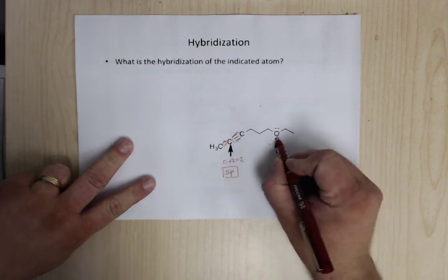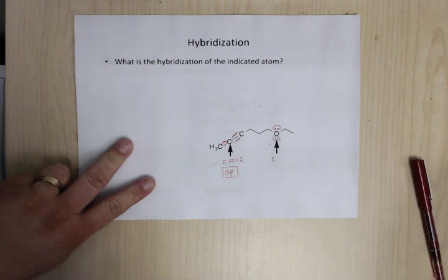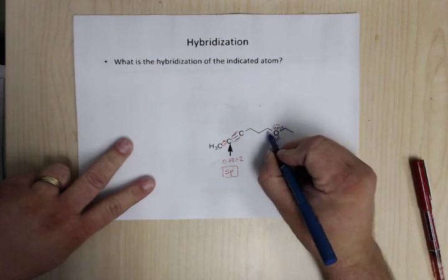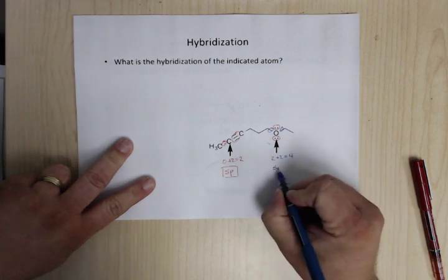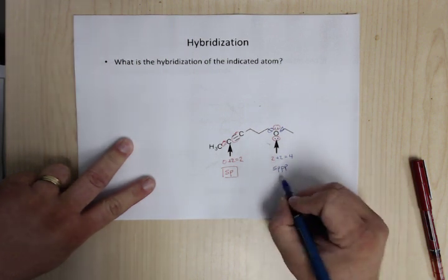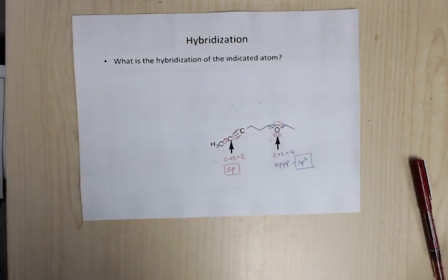For this oxygen, there are two lone pair sets and then two bond sets. So we're going to need four letters, so we're going to go SP, P, so SP3. The easiest way to take that.